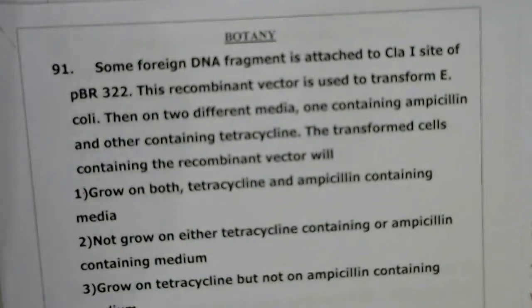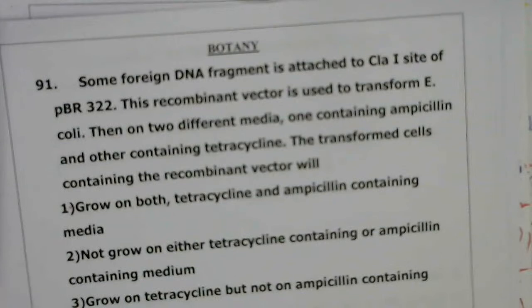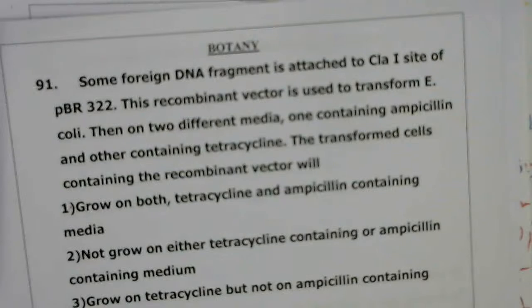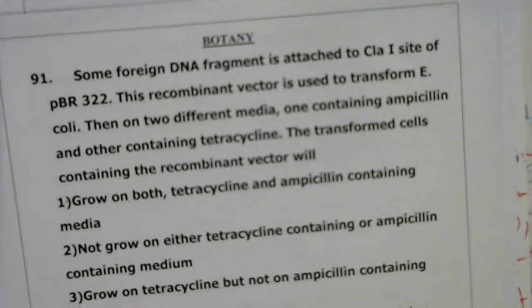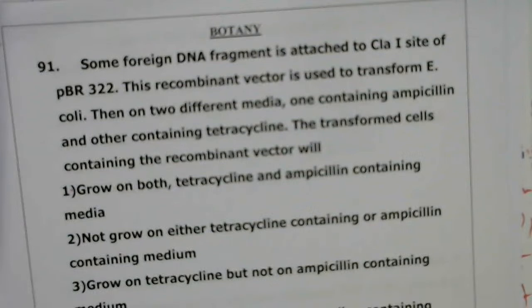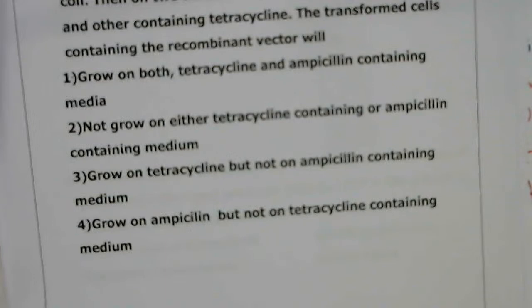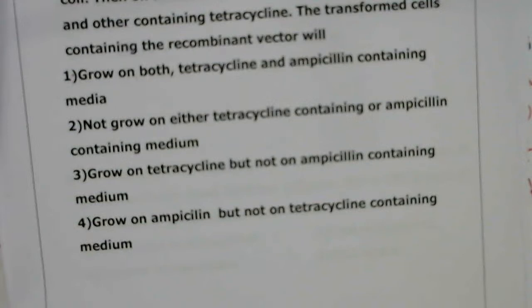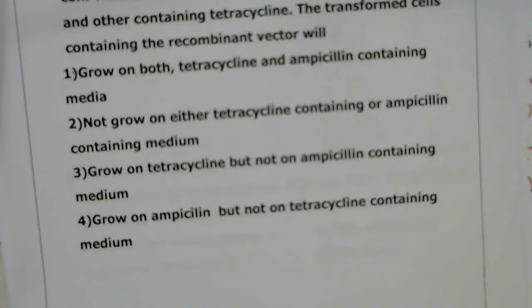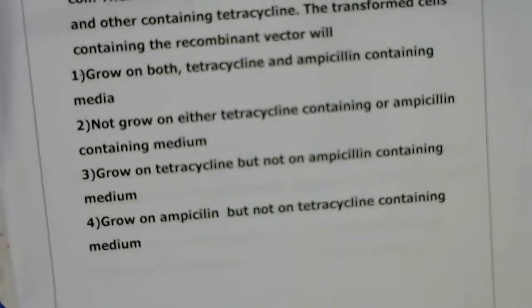Good afternoon students. Today we are going to discuss the paper of Grand Test 11. The first question: a DNA fragment is attached to the CLA1 site of PBR322. This recombinant vector is used to transform E. coli cells, then plated on two different media — one containing ampicillin and another containing tetracycline. The transformed cells containing the recombinant vector will show which of the four given options?